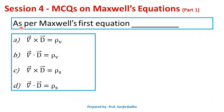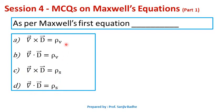Next question: as per Maxwell's first equation, which is correct — curl of D equals rho_V, divergence of D equals rho_V, curl of D equals rho_S, or divergence of D equals rho_S? Which one is the correct option here?